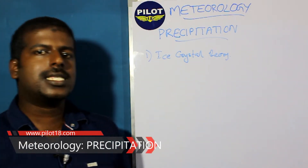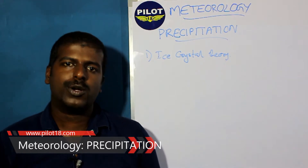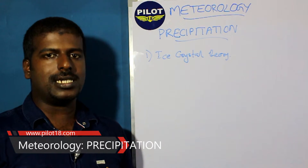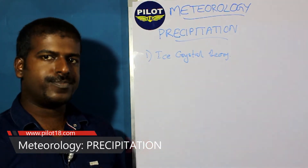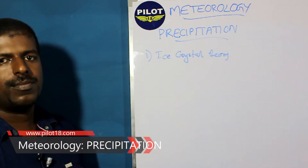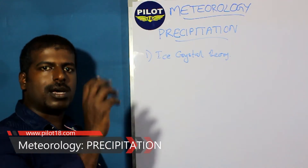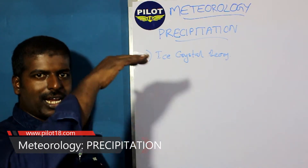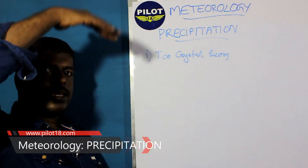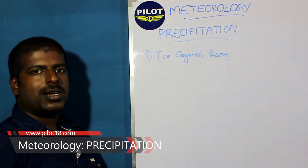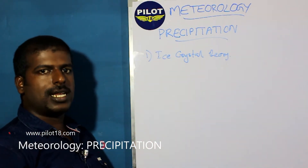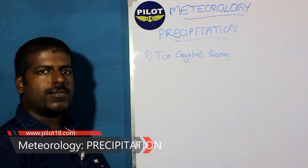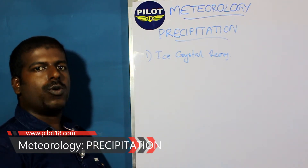However, the ice crystal theory cannot describe how rain occurs in warm regions like the tropics. In those regions ice crystals are not present because it is warmer and rain clouds are not high enough for the lapse rate to cause freezing level temperatures. Rain clouds can be seen at around 3,000 to 5,000 feet there. So a different theory is needed.